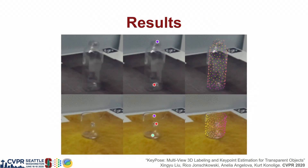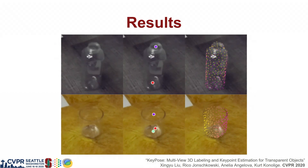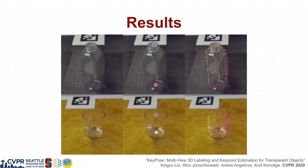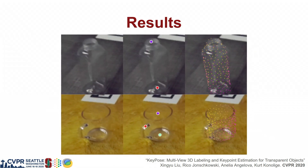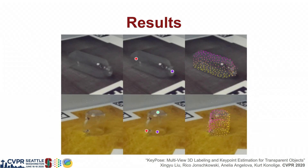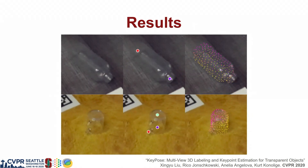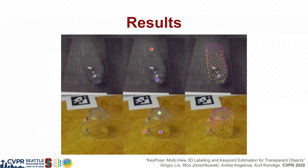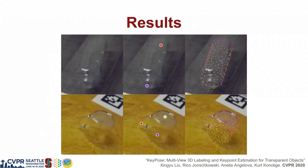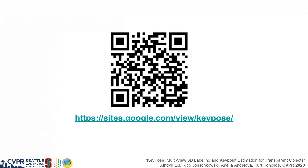Here are some prediction results. We define and estimate 2 keypoints for the transparent bottle and 3 keypoints for the transparent cup. Methods based on depth do not work on these objects. Thanks for watching.